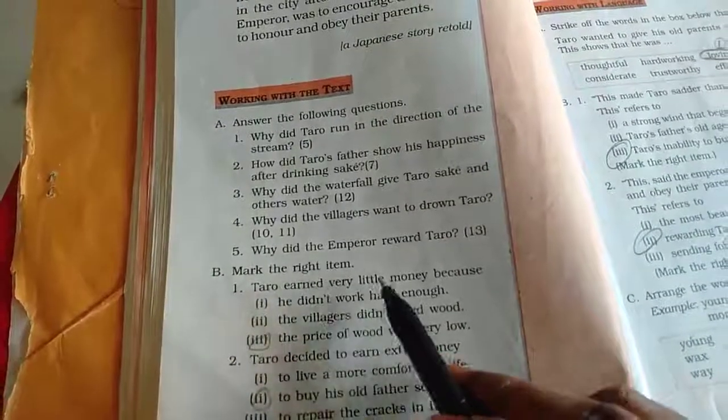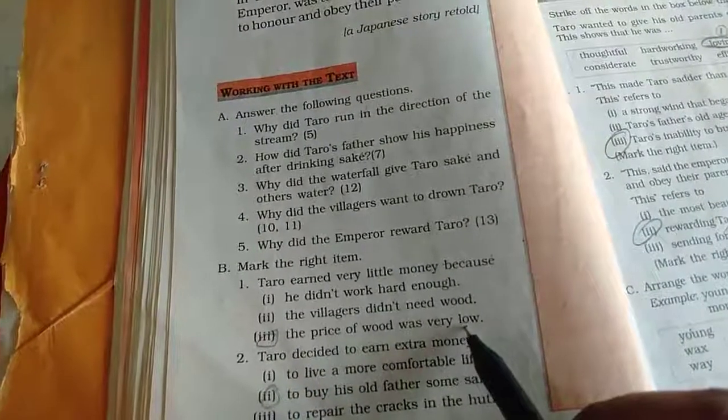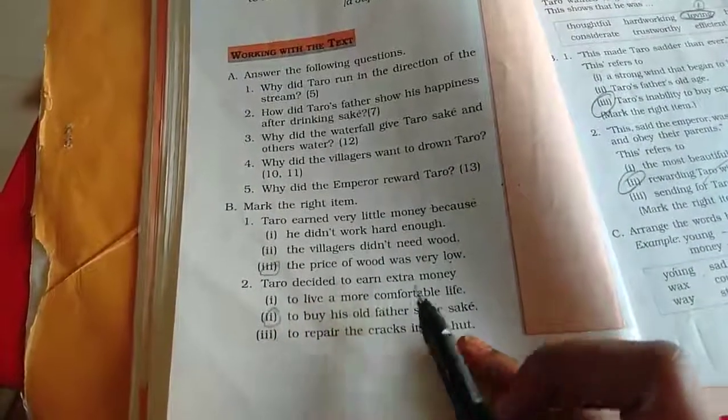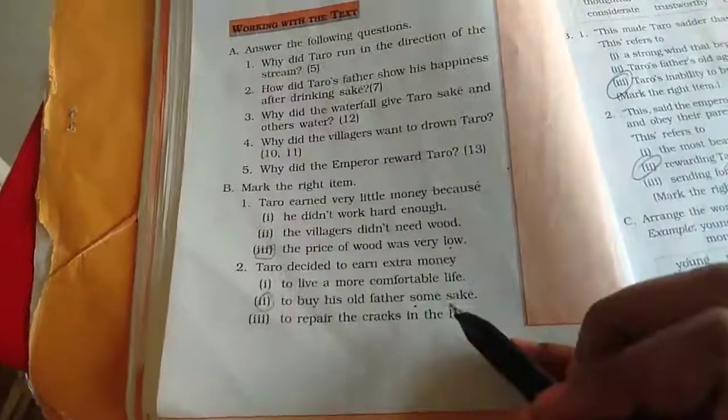Mark the right name. Tharu earned very little money because the price of wood was very low. So Tharu decided to earn extra money to buy his old father for what? Shake.